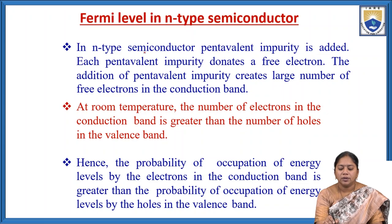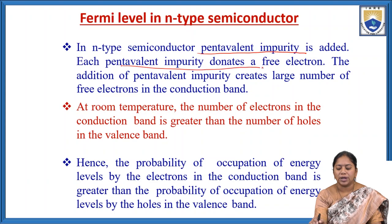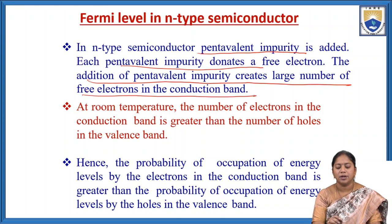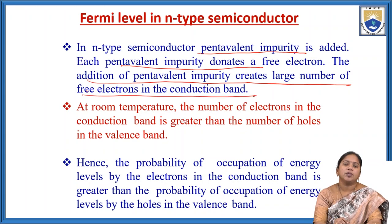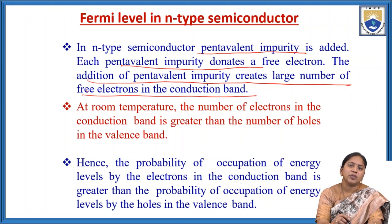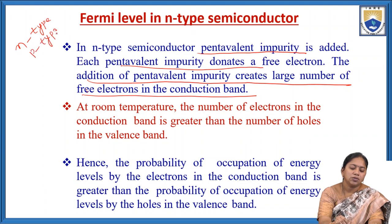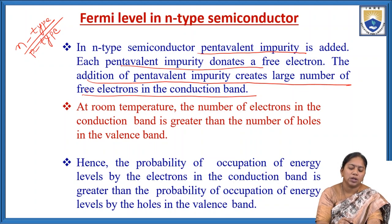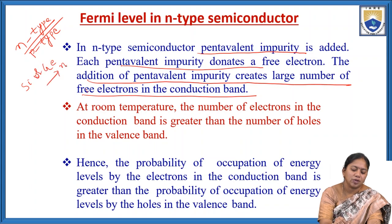In N-type semiconductors, pentavalent impurity is added. Each pentavalent impurity donates a free electron, so the addition of pentavalent impurity creates a large number of free electrons in the conduction band. N-type semiconductor means we are adding pentavalent impurities to either silicon or germanium crystal, forming the N-type semiconductor.